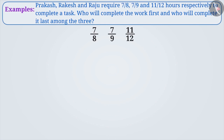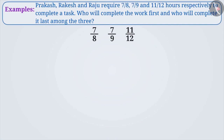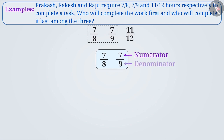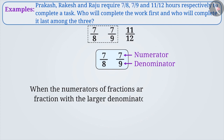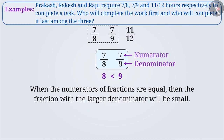Let's arrange them in ascending order. If we consider the two fractions 7 by 8 and 7 by 9, the numerators of these two fractions are equal, but the denominators are not equal. When the numerators of fractions are equal, the fraction with the larger denominator will be the smaller one. Since the denominator 9 of 7 by 9 is greater than the denominator 8 of 7 by 8, the fraction 7 by 9 is smaller than 7 by 8.